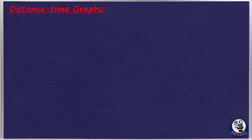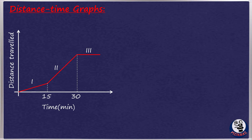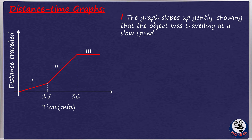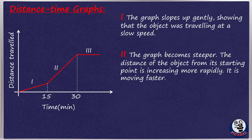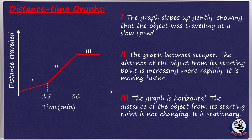We can show information about the motion of an object in the form of a distance-time graph. This graph has three sections. In section 1, the graph slopes up gently, showing the object was traveling at a low speed. In section 2, the graph becomes steeper — the distance from the starting point is increasing more rapidly, so it is moving faster. In section 3, the graph is horizontal — the distance from the starting point is not changing, meaning the object is stationary. The slope of the distance-time graph tells us how fast the object was moving: the steeper the graph, the greater its speed. When the graph is horizontal, its slope is zero, meaning the object's speed was zero.